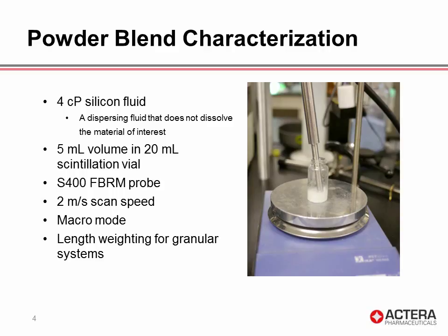We use the FBRM probe to characterize active ingredients and common excipients in our lab. What's nice about this probe is that it can be used in virtually any size container over a wide range of solids content. For powder blend characterization in this example, we're using a 4 centipoise silicon fluid to suspend the particles. The silicon fluid does not dissolve or interact with our powder blend, so it makes a good choice for suspension and characterization.